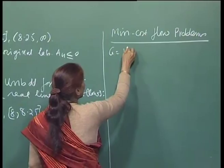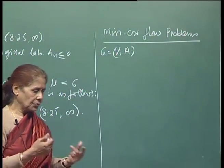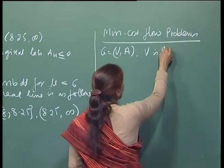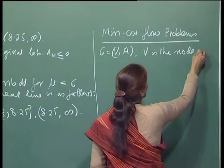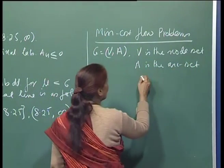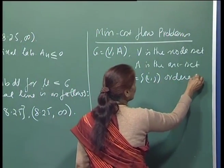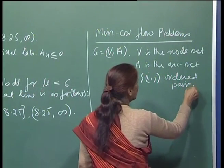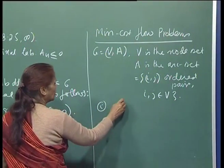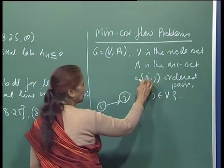The idea is you have G = (V, A). Here again, for the shortest path problem, I took directed arcs — directed edges which we call arcs. G is (V, A) where V is the node set, and A is the arc set — that is A is the set of ordered pairs (i, j) for i and j belonging to V. That means you have a node i and a node j; the idea is you have a directed arc, meaning you can go from i to j. This ordered pair is (i, j).